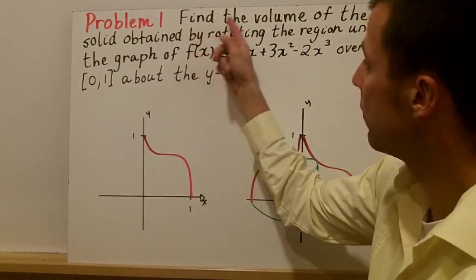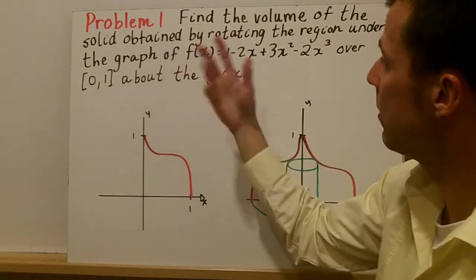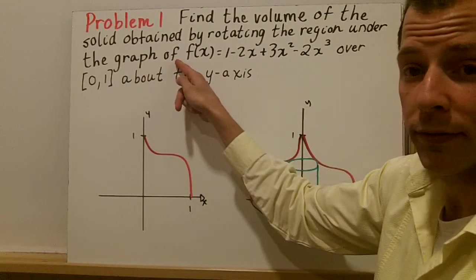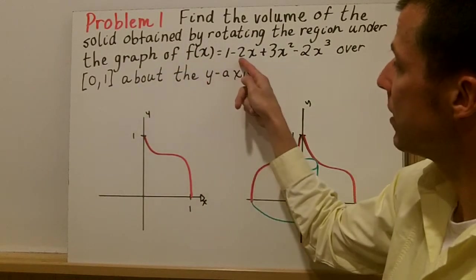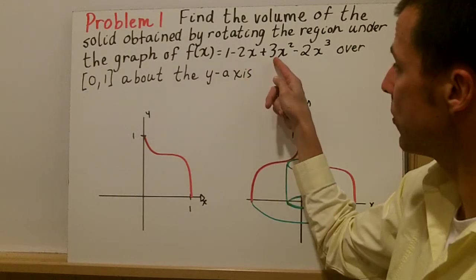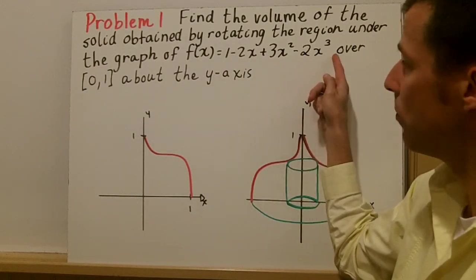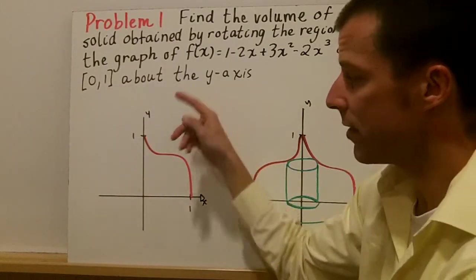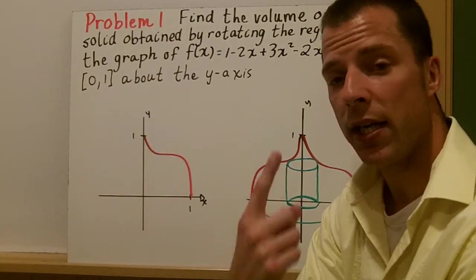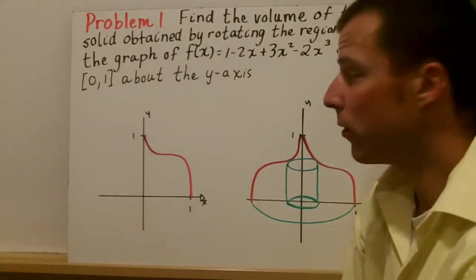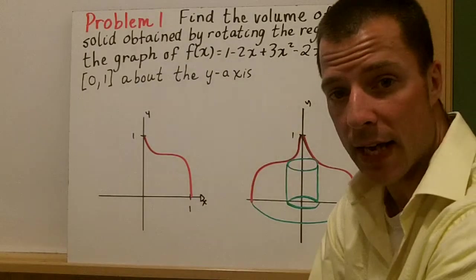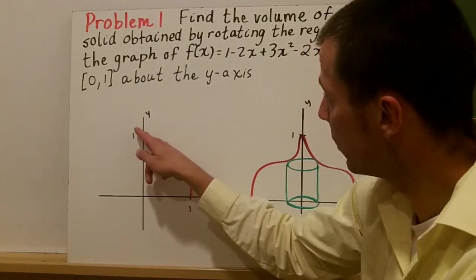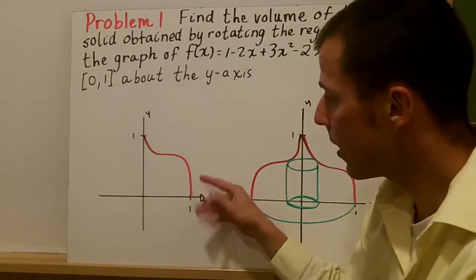In number one, we're going to find the volume of the solid obtained by rotating the region under the graph of f(x) equals 1 minus 2x plus 3x squared minus 2x cubed over the interval from 0 to 1 about the y-axis. We're rotating vertically, yet we're going to differentiate with respect to x. Here's the function here, f(x) in red.